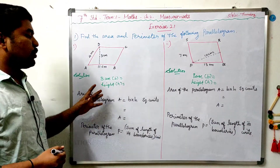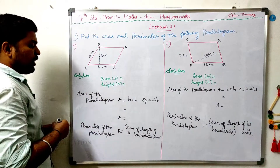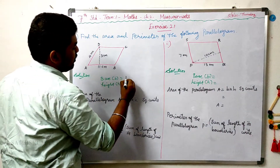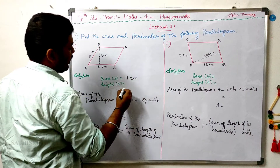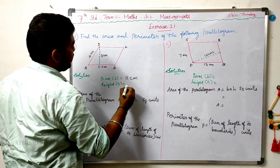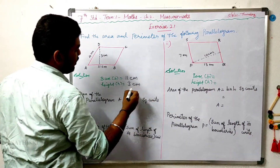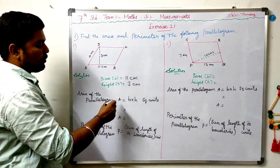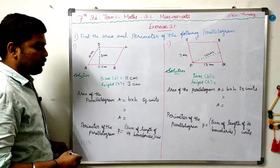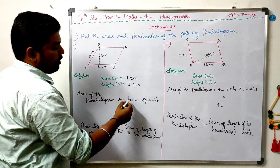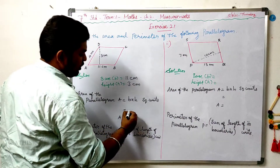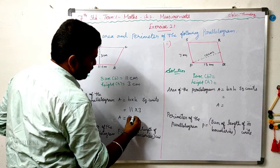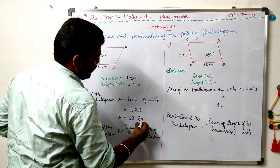Let's take the base and height. Base b is equal to 11cm and height h is equal to 3cm. So, the area of the parallelogram A is equal to base into height square units. Base is 11 into 3 — 11 threes are 33 square centimeters.